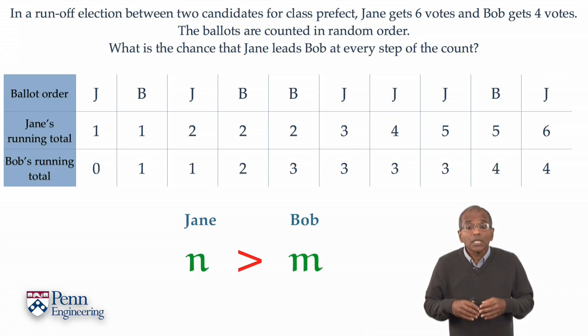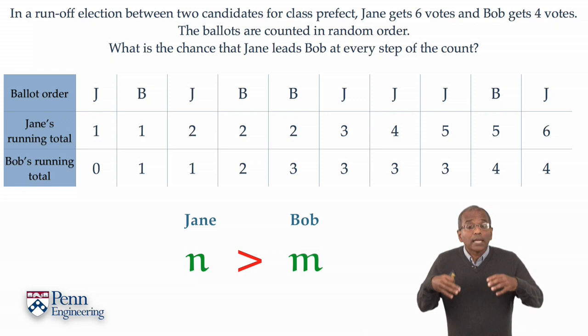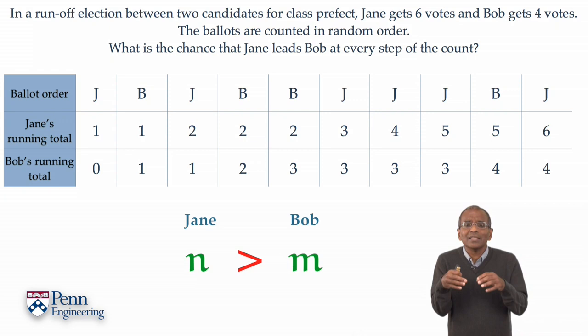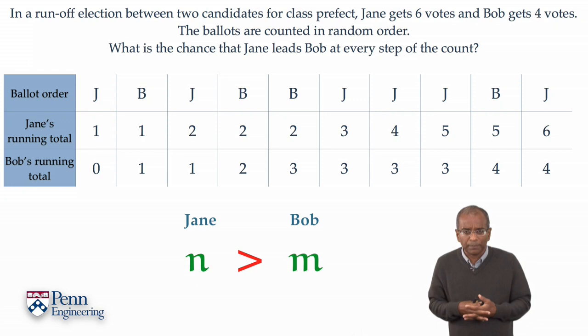This problem has an ancient and classical vintage. It was analyzed by W. A. Whitworth in 1878 by combinatorial methods. We shall look at the problem through a different prism — conditioning ideas in this setting provide an elegant and beautiful approach which unlocks the problem very elegantly.